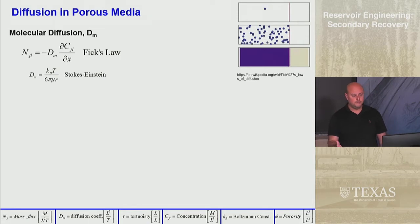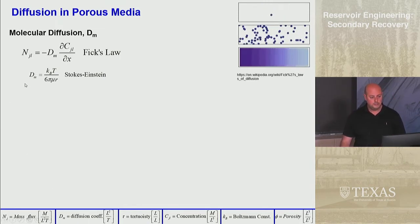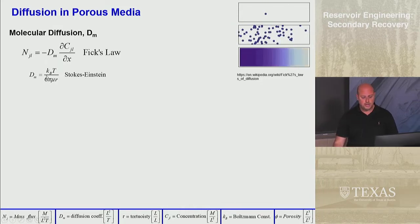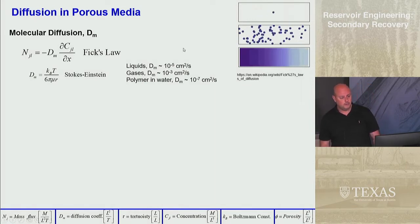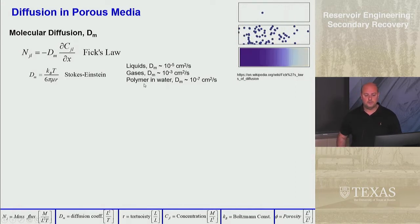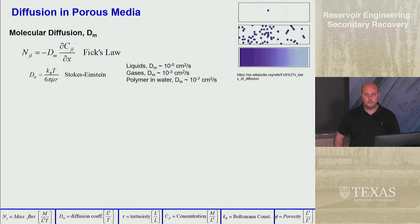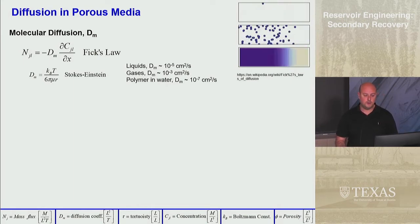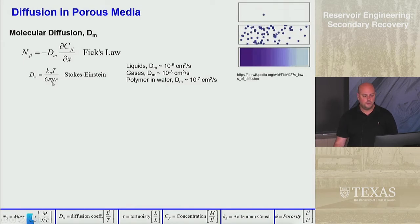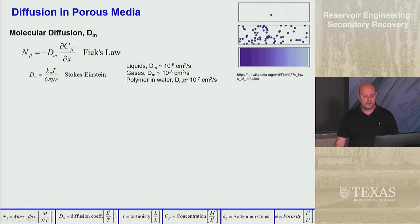The Stokes-Einstein equation relates diffusion coefficients in simple cases: D = k_B T / (6π μ R), where k_B is the Boltzmann constant, T is temperature in Kelvin, μ is the viscosity of the fluid, and R is the radius of the diffusing particle. Gases have diffusion coefficients on the order of 10^-3 cm²/s; liquids are about two orders of magnitude less. Polymers are viscous fluids — since the diffusion coefficient is inversely proportional to viscosity, more viscous polymer fluids (almost like hair gel) have lower diffusion coefficients.